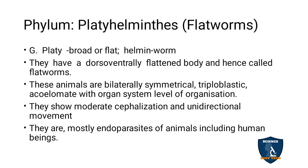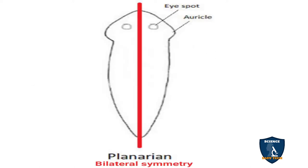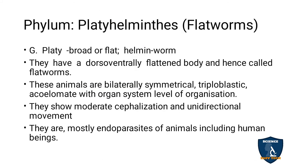The body is flattened, so it is called flatworms. These animals have bilateral symmetry — bilateral means the animal can be cut in one plane only, into two equal halves. That type of symmetry is known as bilateral symmetry.